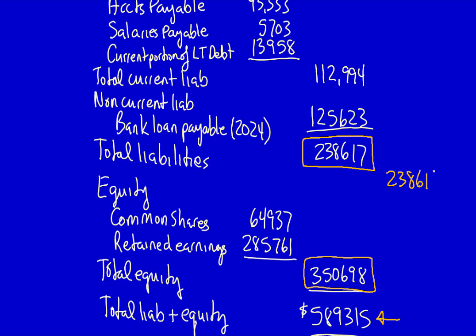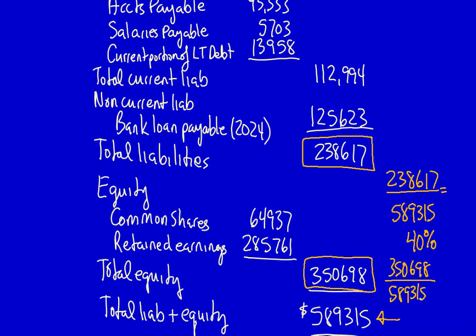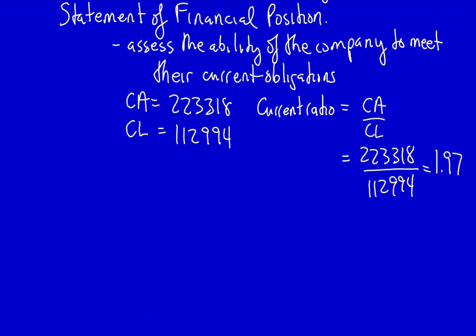$238,617 divided by $589,315 shows that 40% of the assets have been financed through debt. Taking $350,698 and dividing by $589,315 shows that 60% of this company's assets have been financed through equity. This company is mainly financed through equity. So the statement of financial position can be used to assess how a company has been financed.